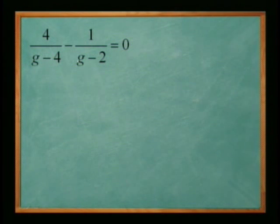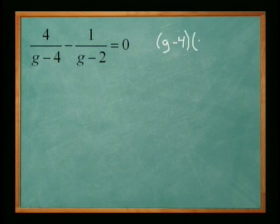The common denominator is basically just going to multiply them both together, so it's going to be g minus four times g minus two.